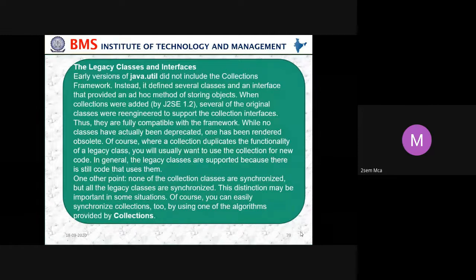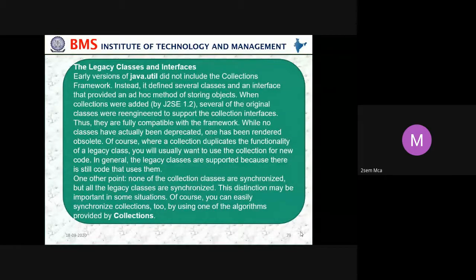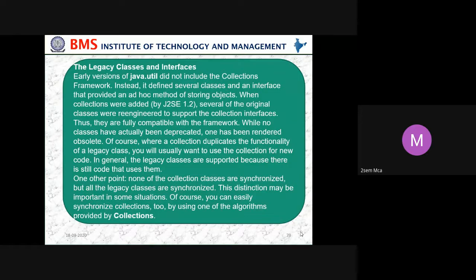Legacy classes and interfaces: Earlier versions of Java utility did not include the collection framework. Instead, it defined several classes and an interface providing ad hoc methods of storing objects. When collections were added in J2SE 1.2, several original classes were re-engineered to support the collection interface. None of the collection classes are synchronized, but all legacy classes are synchronized — this distinction may be important in some situations. You can easily synchronize collections too using algorithms provided.